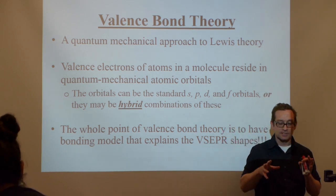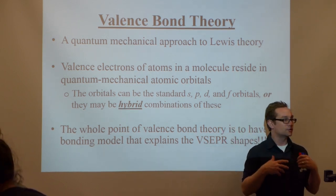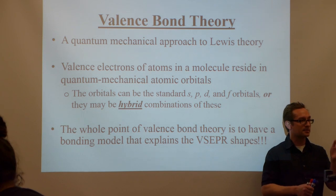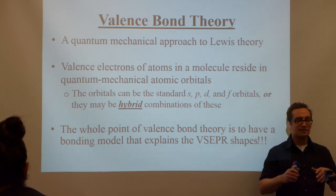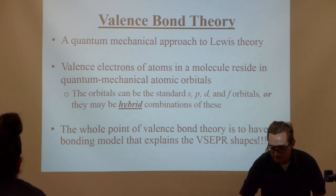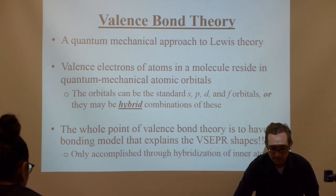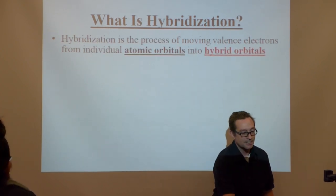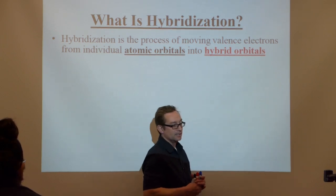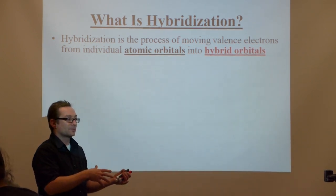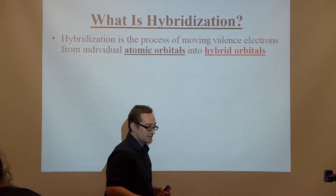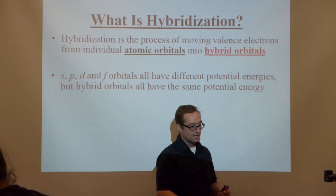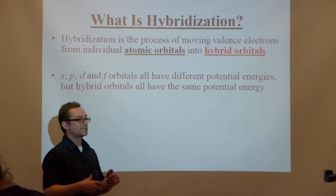The whole point of this bonding model is to explain the shapes of molecules. What bonding model can help explain the shapes? Clearly, if you just look at the atomic orbitals by themselves, the bond angles don't match up and the bond energies don't match up. This is only accomplished through hybridization of the inner atoms.